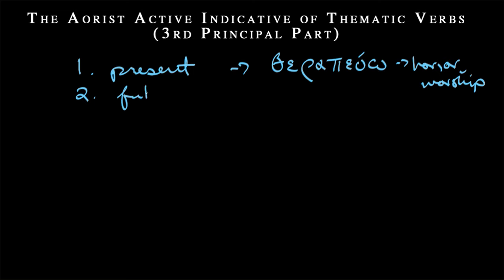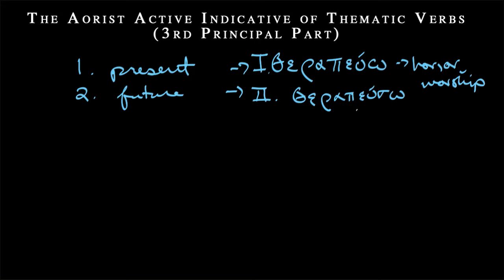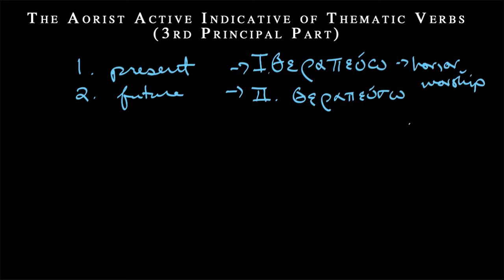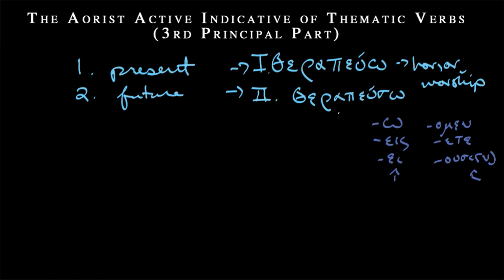The next tense we learned was the future, which we built off from the second principal part. So the first principal part gave us the present, and the future was our second principal part. This adds a sigma — which becomes complicated when we have a phi plus a sigma, like in grapho, this would become graphso — but for the most part, we could just add a sigma and we're in the future. Both of these take a set of endings we're now pretty familiar with: all long and monosyllabic, or with a short ultima and disyllabic, so the accent always fell on the end of the stem.